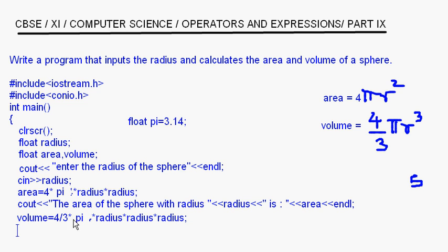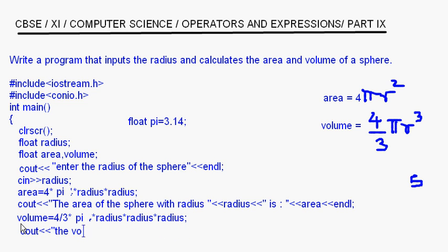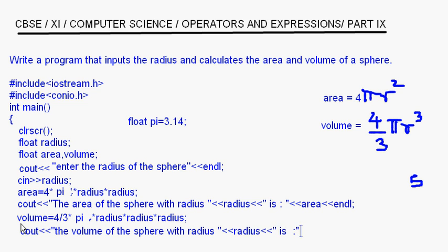As I said, the division and multiplication operators both have the same precedence and associativity is left to right, so 4/3 into pi will be evaluated first going left to right. Then we have cout: "the volume of the sphere with radius", then the radius variable, then "is", then volume, and then endl.